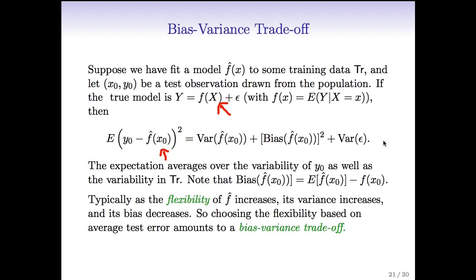This expectation averages over the variability of the new y₀ as well as the variability in the training set used to build f̂. It turns out we can break this expression into three pieces exactly. One piece is the irreducible error from random variation in the new test point y₀ about the true function f. The other two pieces break up the reducible part of the error into two components: the variance of f̂, which is the variance from having different training sets, and the bias of f̂, which is the difference between the average prediction at x₀ averaged over all different training sets and the true f at x₀.